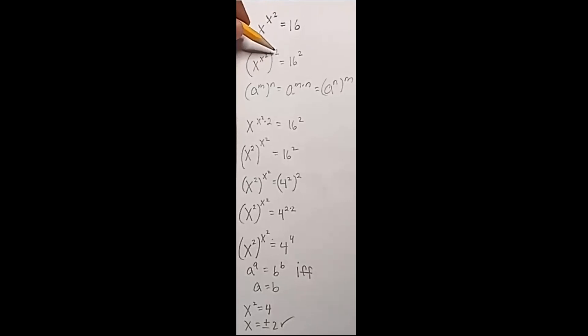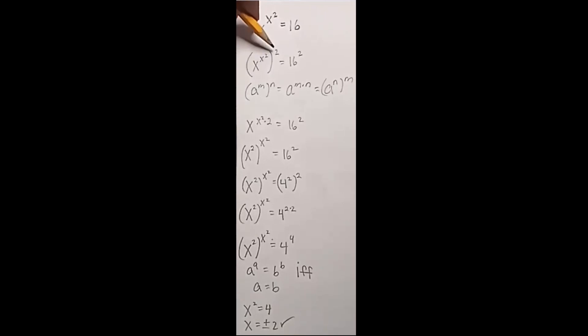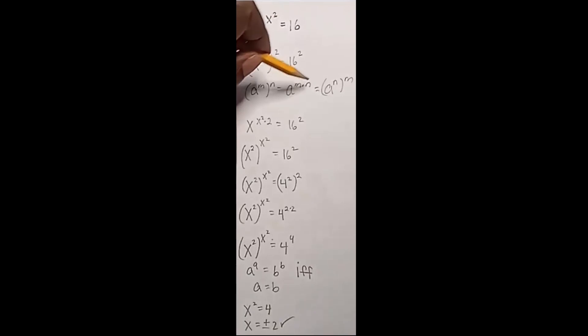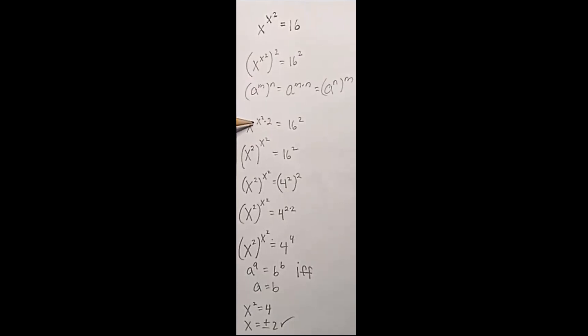Squaring both sides gives me x to the x squared, squared, equals 16 squared. By this rule, that 2 is going to be my n, and x squared is going to be my m. So I can move out parentheses and put this guy here — x squared times 2.